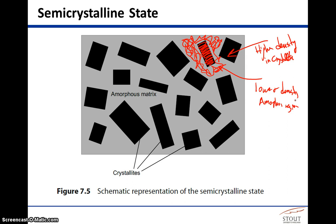Because of the branching in LDPE, it prevents efficient crystal formation and results in very low crystallinity, and as a result it has a lower density. This is the reason we have those two different grades of polyethylene.